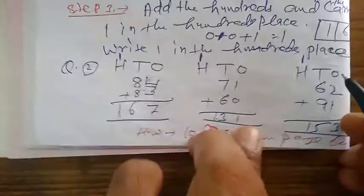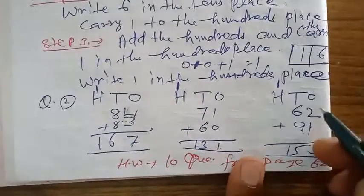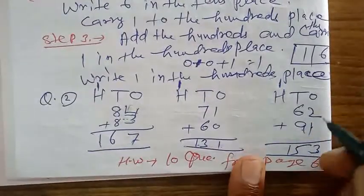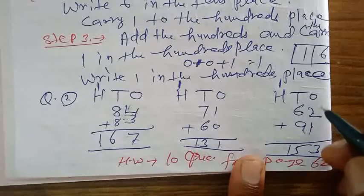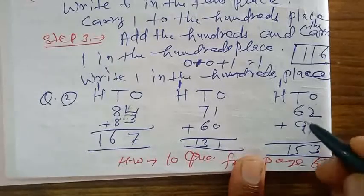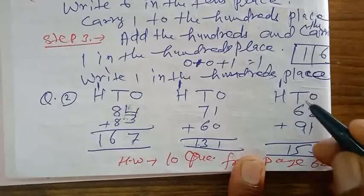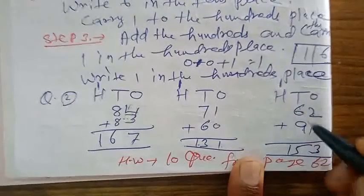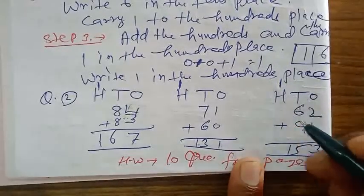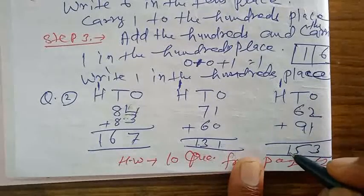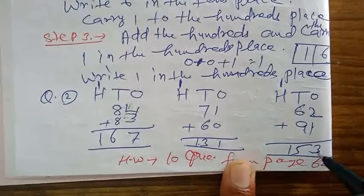Here we have seen that 62 plus 91. First, add the ones: 2 plus 1 equals 3. Then add the tens: 9 plus 6 equals 15, write 5, carry 1. So the answer is 153.